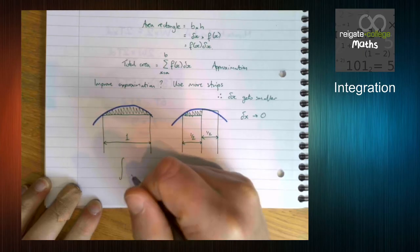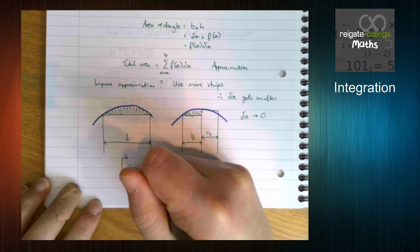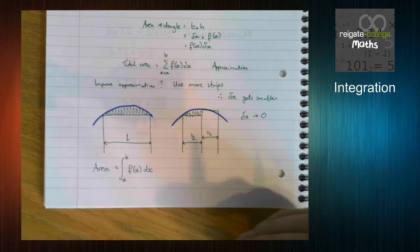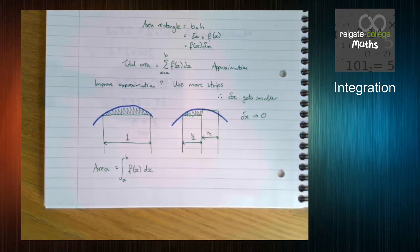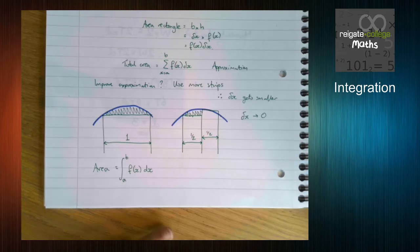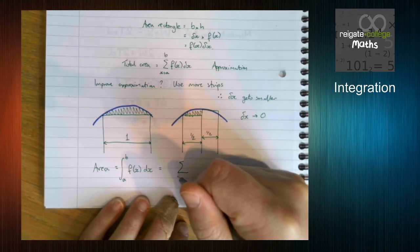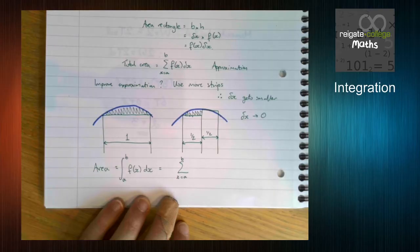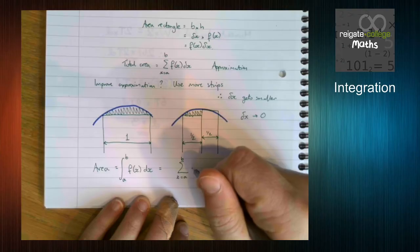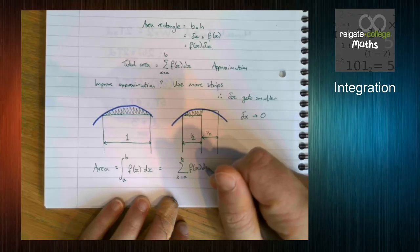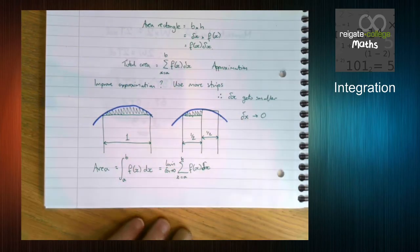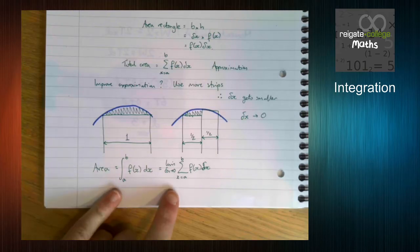So integration, so if we have the integration between a and b of some function with respect to x, we know that this is the area. Okay, we did that in the first year of maths. So that hopefully should be a nice, very familiar thing to talk about. So what we're doing is we're taking this sum. We're taking this sum, and we're making the area for, we've got f of x delta x. And we're taking the limit as delta x tends to zero. And that's where integration comes from as an area.